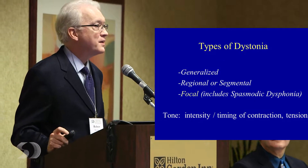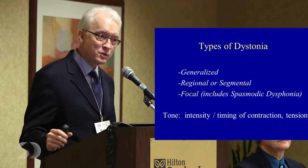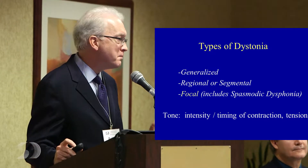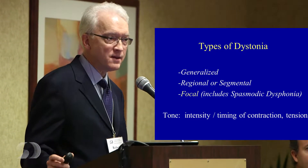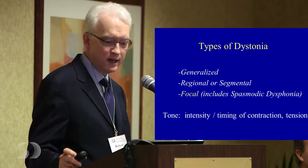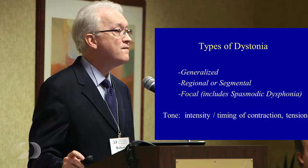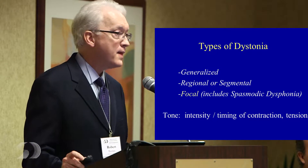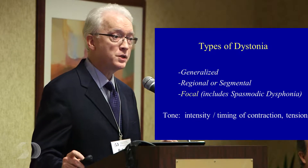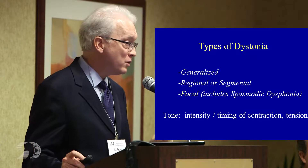There is generalized dystonia, where a person has this abnormal tone of muscles that can affect virtually the entire body. Then there are regional or segmental dystonias — the idea that a section of the body, such as the eyes, jaw, or neck, is affected. And then there is focal or localized dystonia, which includes spasmodic dysphonia. So spasmodic dysphonia is an uncommon neurological disorder of muscle tone, spasms, and abnormal tone — and it's a focal dystonia.